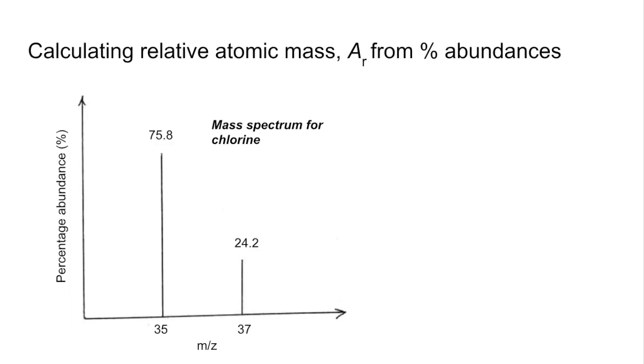So the different types of calculations now. So we'll start with: how do you calculate relative atomic mass from percentage abundances? So there's a typical spectrum now, mass spectrum on the screen. That's for chlorine. So we've got the percentage abundance of the two isotopes. So 35 is 75.8% abundant, and 37 is 24.2.